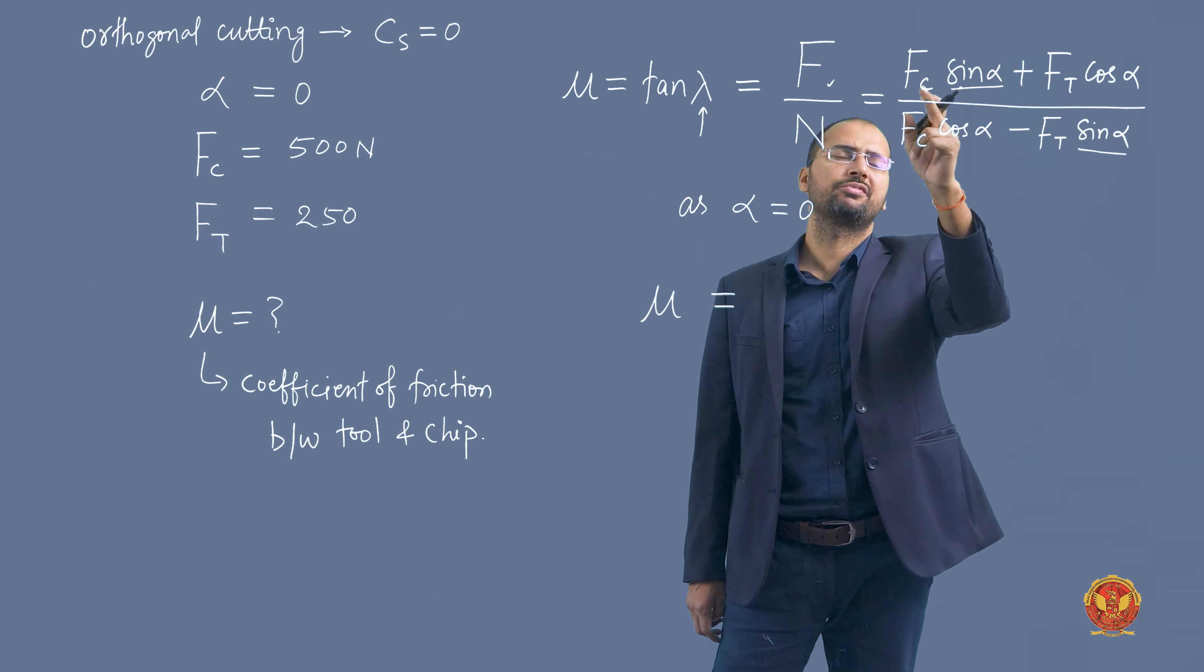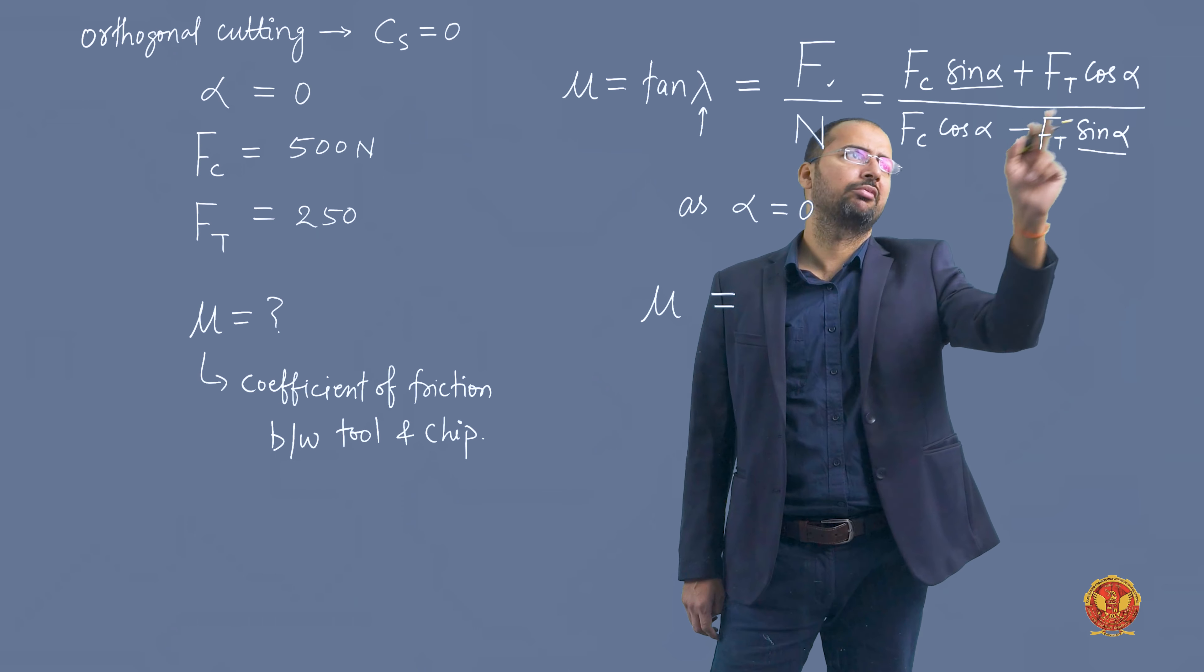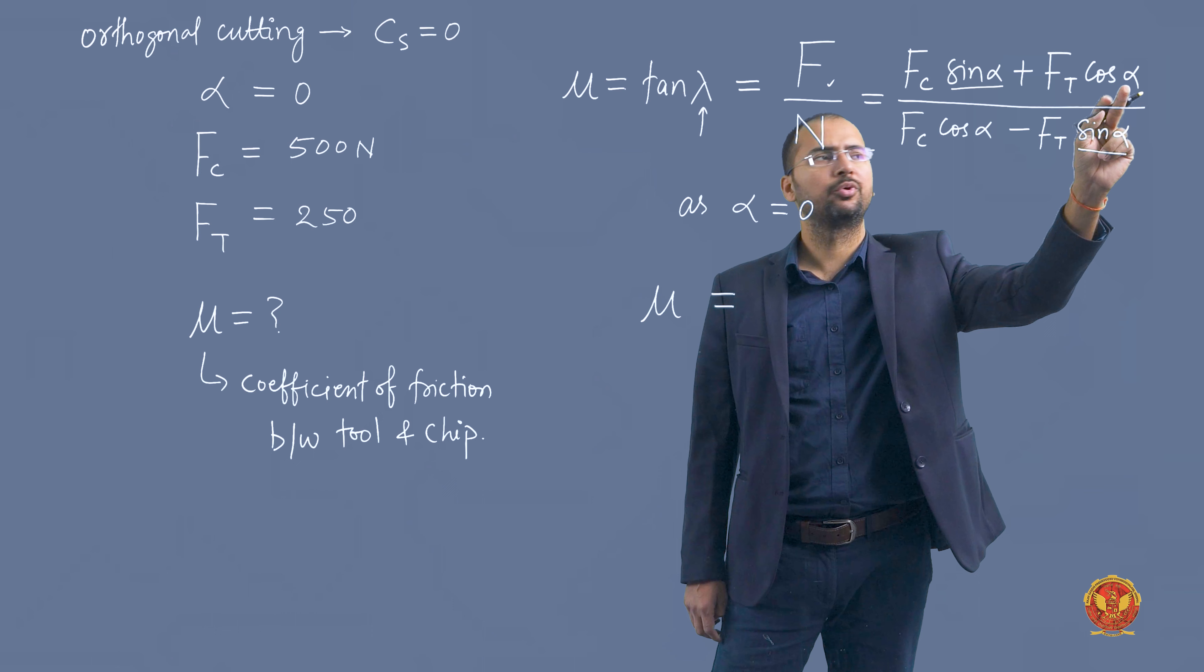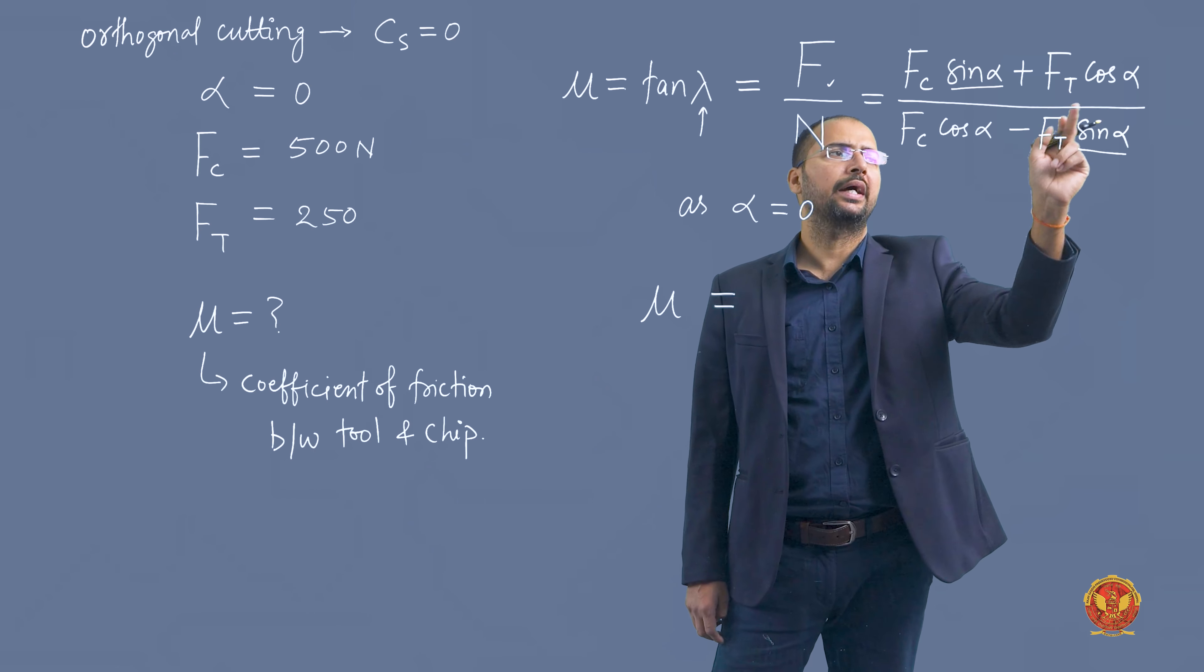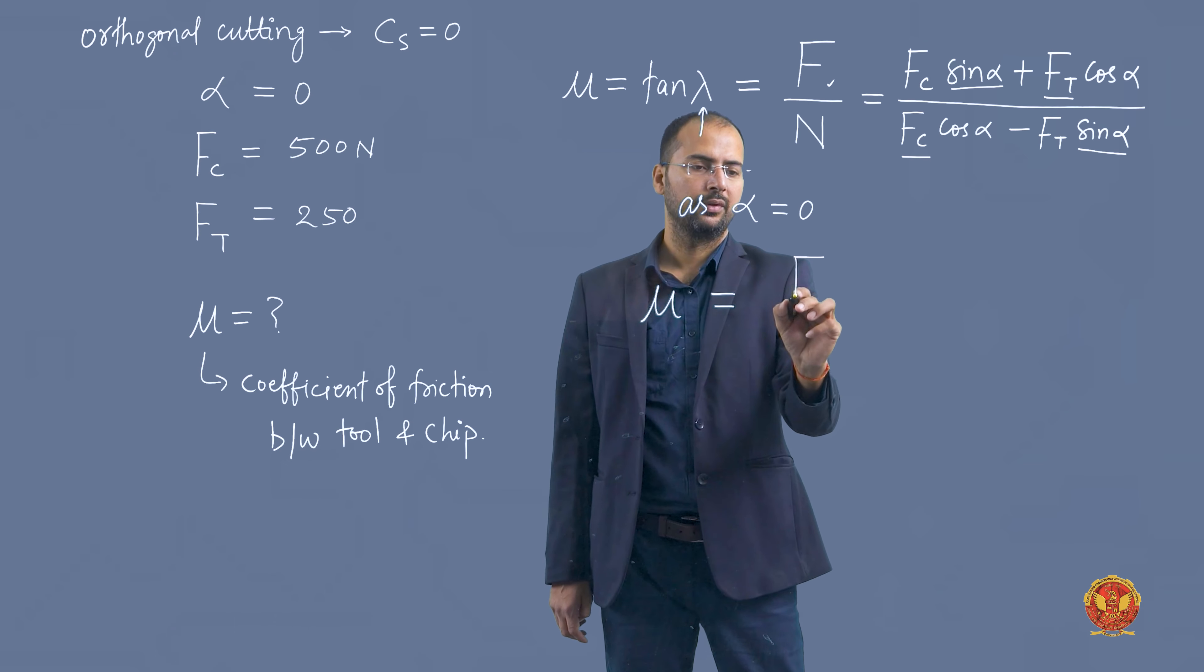That means zero times Fc becomes zero, leaving us with Ft cos alpha and Fc cos alpha. Putting alpha as zero, cos zero becomes one. That means we have only two things remaining: Ft and Fc. So mu equals Ft divided by Fc.